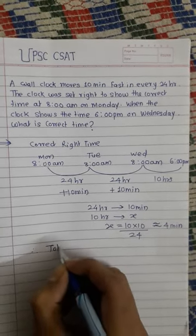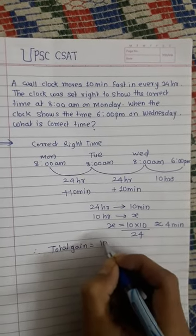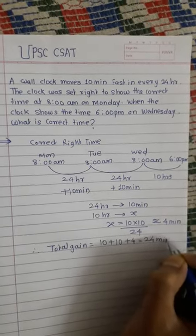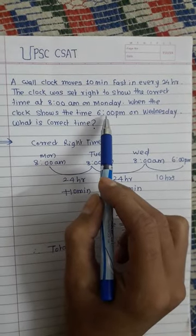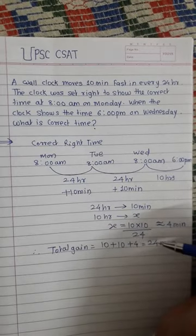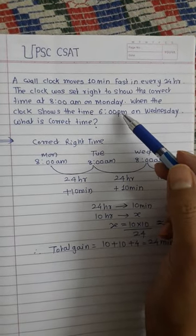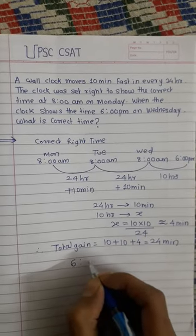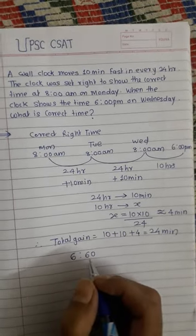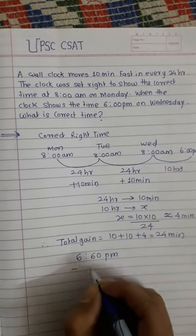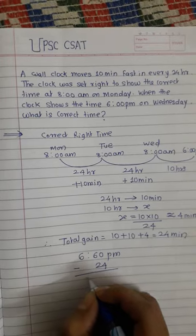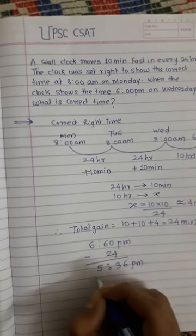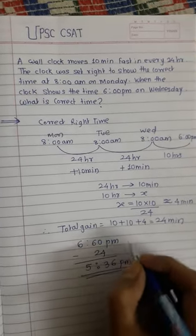Therefore, total gain = 10 + 10 + 4 = 24 minutes. The clock shows the false time. To find the correct time, we subtract 24 minutes from 6:00 p.m., and we get 5:36 p.m. This is the correct time, and 6:00 p.m. is the false time.